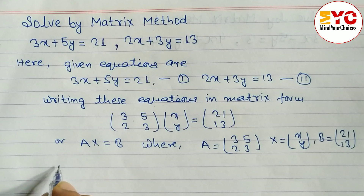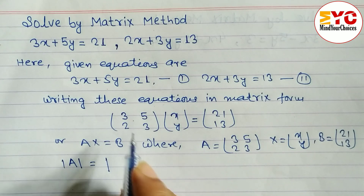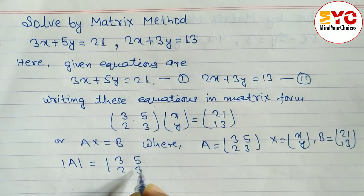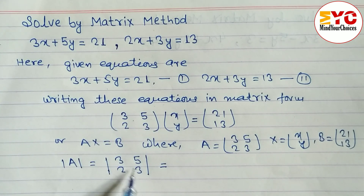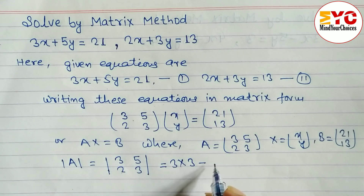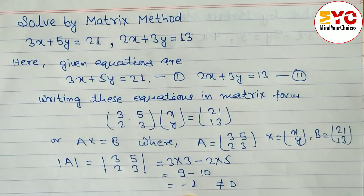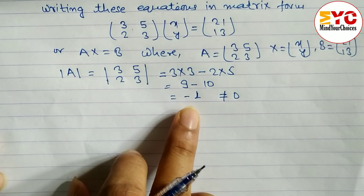Next, we find the determinant of A to check if it is a singular or non-singular matrix. Writing the elements inside vertical brackets: 3, 5, 2, 3. We multiply the main diagonal: 3 times 3, minus the non-diagonal: 2 times 5, giving 9 minus 10 equals minus 1, which is not equal to 0. If the determinant were 0, we could not find a unique solution.